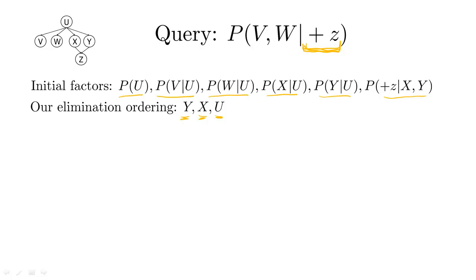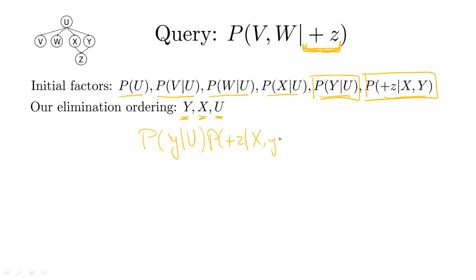We start by eliminating Y. We look at all factors that involve Y — there are two: P(Y|U) and P(+Z|X,Y). These two factors get joined by multiplying consistent entries together, then we sum over Y. What we get out is our first generated factor, F1, over the variables U, X, and plus Z.